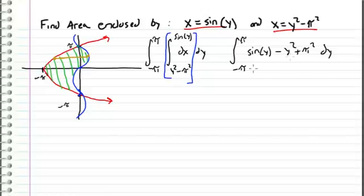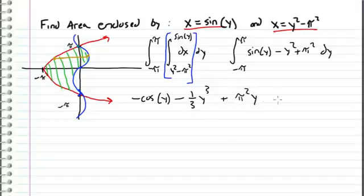Now we can integrate this expression with respect to y. The integral of sine of y is negative cosine of y, minus one third y cubed using the power rule, plus pi squared times y. This will be evaluated from negative pi to pi.